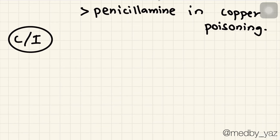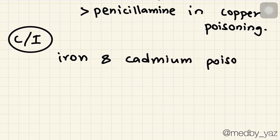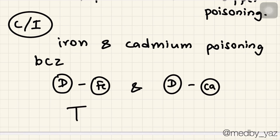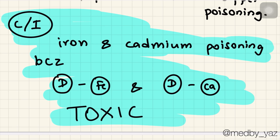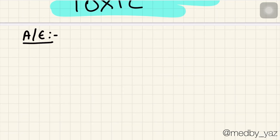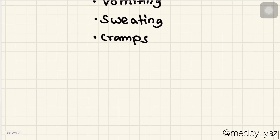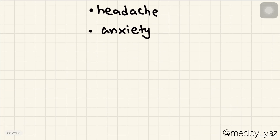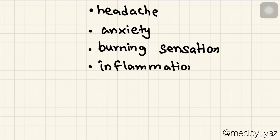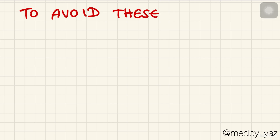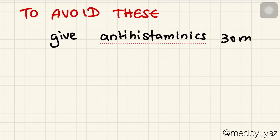Next, two important contraindications: dimercaprol should never be used in iron and cadmium poisoning because the dimercaprol-iron complex and dimercaprol-cadmium complex are very toxic. Adverse effects of dimercaprol include increase in BP, increase in heart rate, vomiting, sweating, cramps, headache, anxiety, burning sensation, and inflammation of mucous membranes. To avoid these side effects, antihistaminics are given 30 minutes before, which will reduce the intensity.